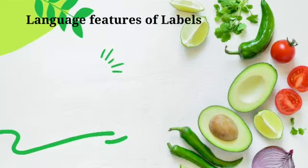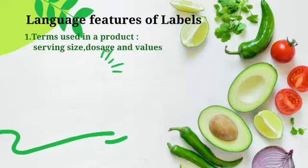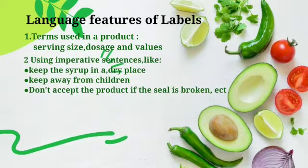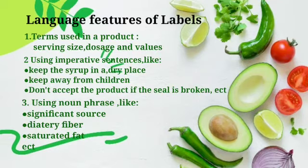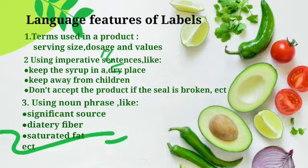Language features of Label: 1. Terms used in the product, like serving size, dosage and values. 2. Using imperative sentences, like 'keep the syrup in a dry place', 'keep away from children', 'do not accept the product if the seal is broken'. 3. Using noun phrases, like 'significant source of dietary fiber', 'saturated fat', etc.